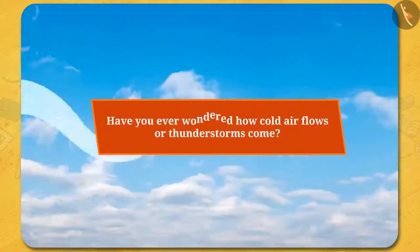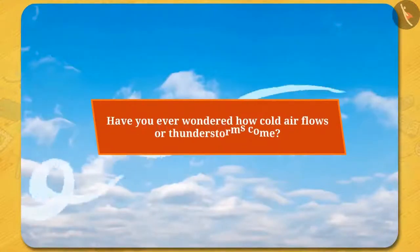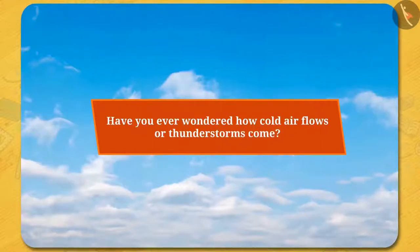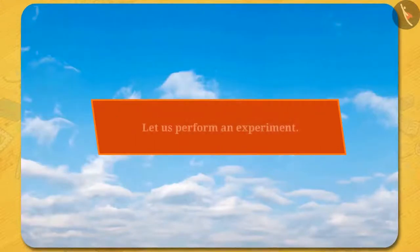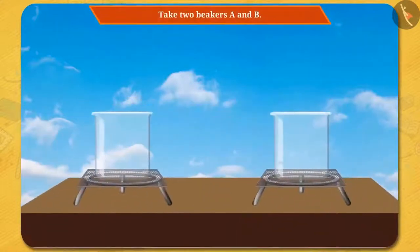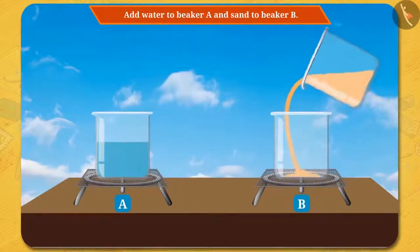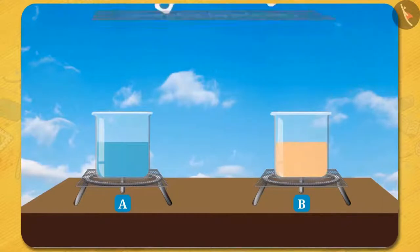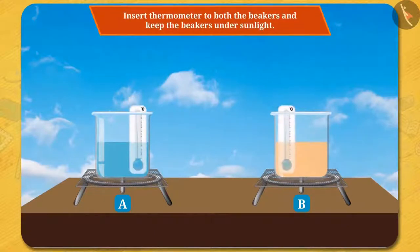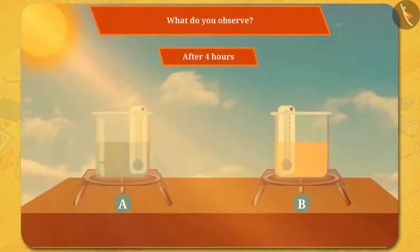Friends, have you ever wondered how cold air flows or thunderstorms come? In order to understand, let us perform an experiment. Take two beakers A and B. Add water to beaker A and sand to beaker B, and after that insert a thermometer into both the beakers. Now keep the beakers under sunlight. What do you observe? The temperature in both of the beakers starts rising.